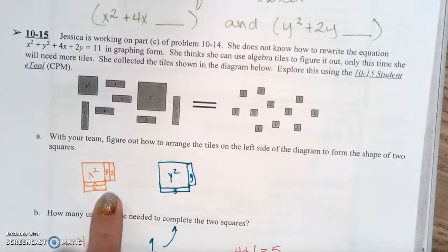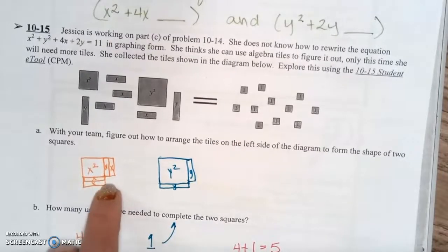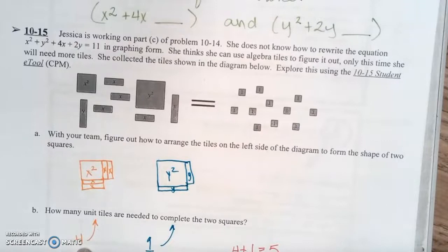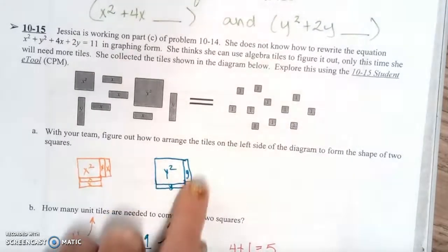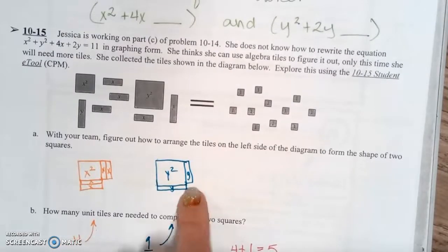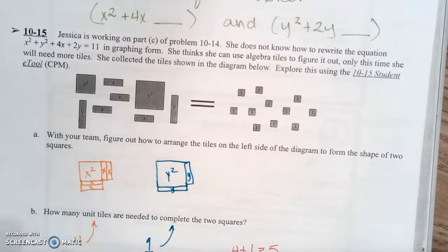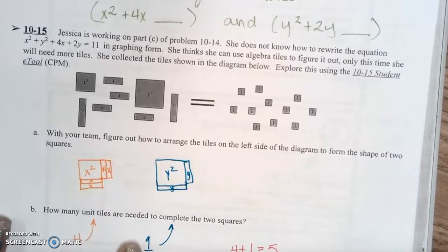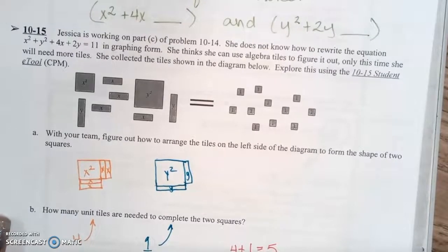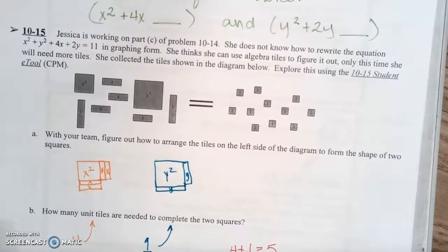For the x's, we're going to need 1, 2, 3, 4 to complete that perfect square. And for the y's, we're just going to need 1 right there to complete its perfect square. So if we count the 4 from here and the 1 from here, we're going to need 5 unit tiles to complete both of those perfect squares.